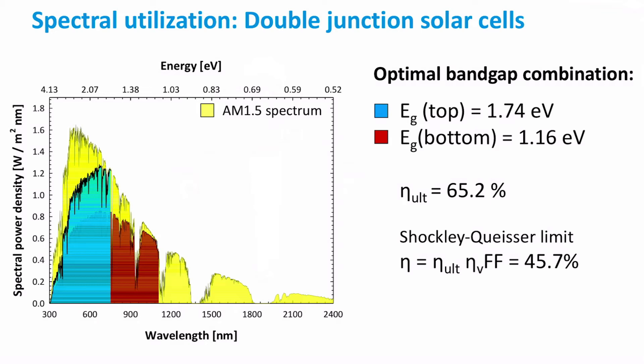In this case, as you can see, the ultimate conversion efficiency increases to 65%. When applying the Shockley-Queisser limit, this double junction solar cell can achieve a maximal conversion efficiency of 45%.